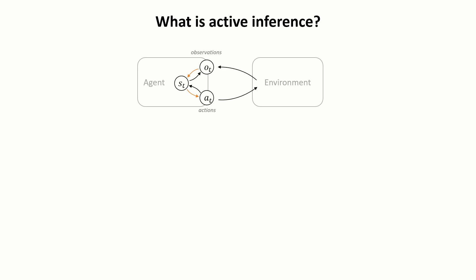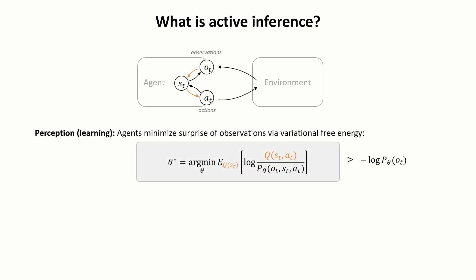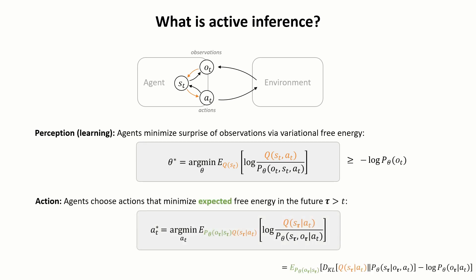An agent requires three sequences of random variables over time, representing observations, latent states and actions. For perception, the agent needs to minimize variational free energy, also known as evidence-lower bound in machine learning, while for actions, the agent selects the ones that are more likely to minimize expected free energy in the future. It is worth noting that there is no actual reward function in this objective, but the role of reward is played by a preference over future observations.